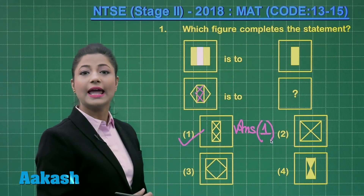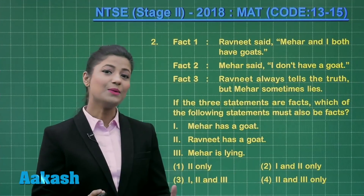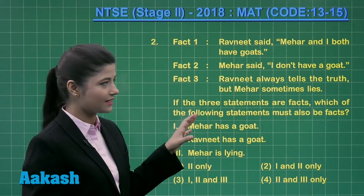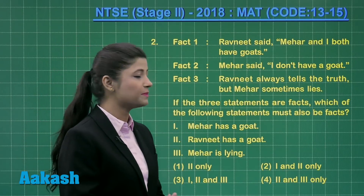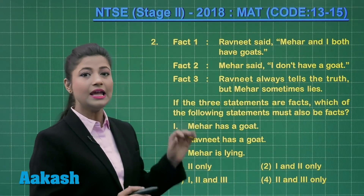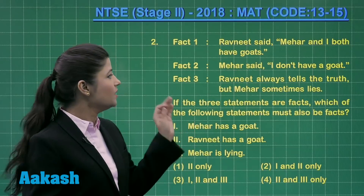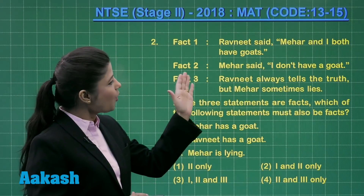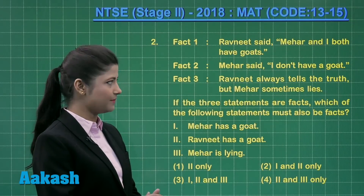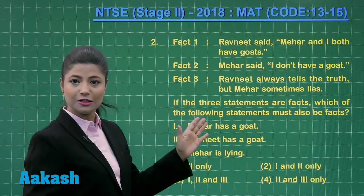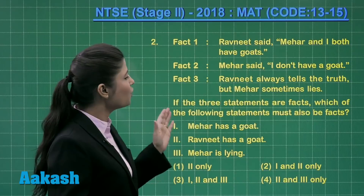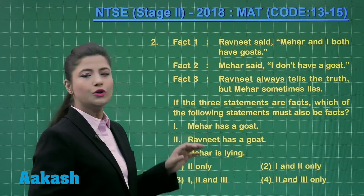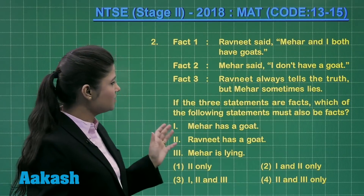Now let's move to question number 2 — a very interesting question containing three facts. Fact 1: Ravneet said 'Meher and I both have goats.' Fact 2: Meher said 'I don't have a goat.' Fact 3: Ravneet always tells the truth, but Meher sometimes lies. Which of the following statements must also be a fact?